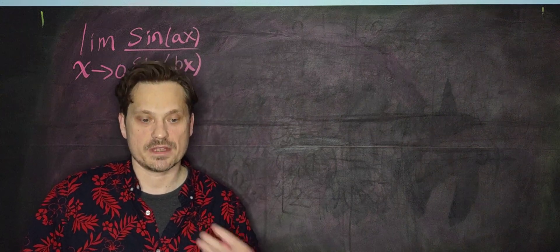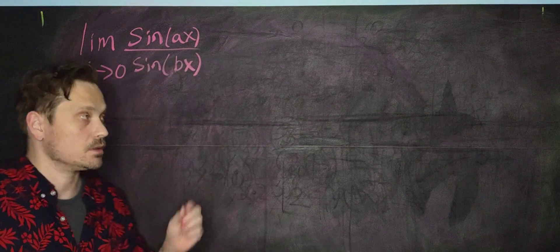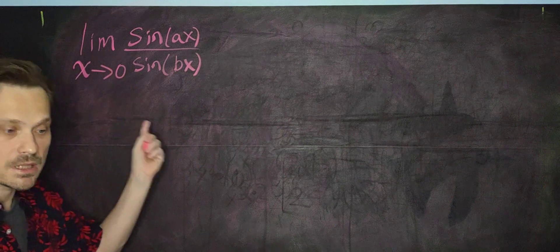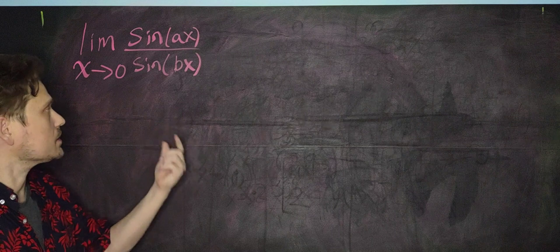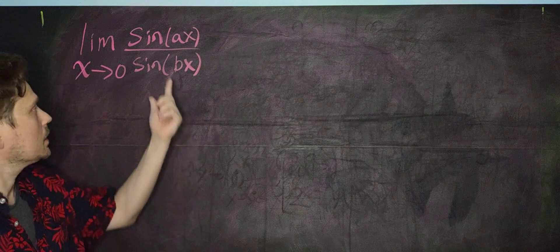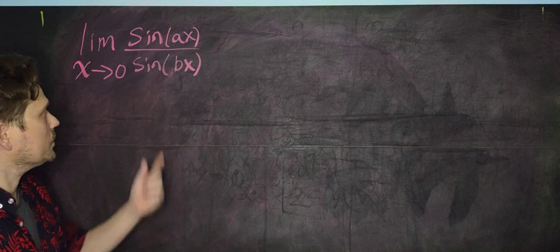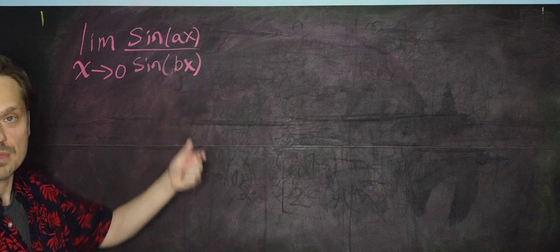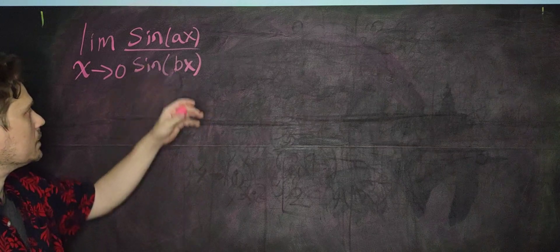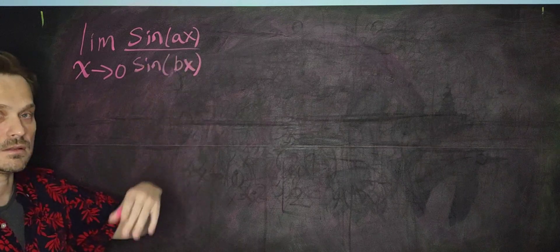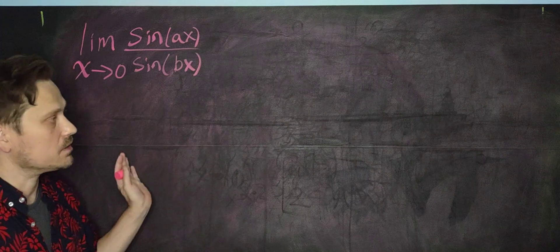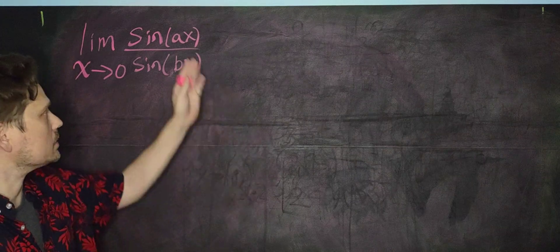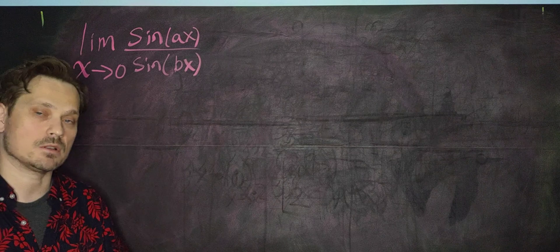Welcome friends. I'm going to show you in this video how to find every limit that looks like the following: the limit as x approaches 0 of sine of ax over sine of bx. So a and b are just some numbers like 2 and 5, or 2 and one half — just some numbers. There's a kind of underlying logic that's beautiful that we can apply even when a and b are what we call parameters.